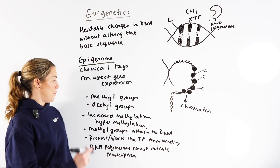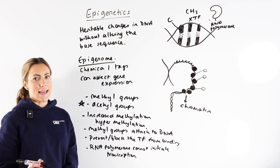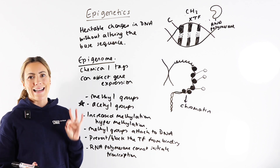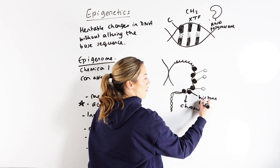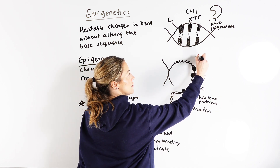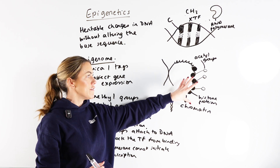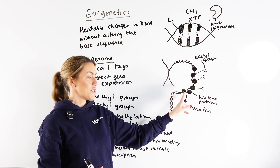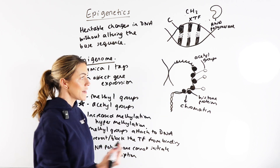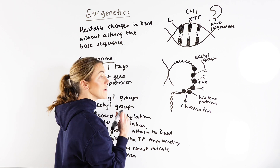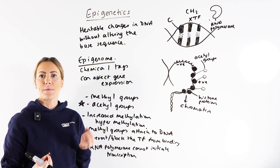Let's talk about our second example: acetyl groups. Acetyl groups don't actually bind to DNA like the methyl groups do — they bind to the histone proteins. The black circles here are the histone proteins, and the white circles are the acetyl groups. Here's a chromosome, here's the DNA magnified — the DNA is wrapped around histone proteins, which we call chromatin. Histone proteins have a positive charge, and DNA has a negative charge because of the negatively charged phosphate groups in the DNA nucleotides.